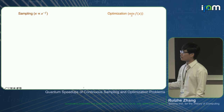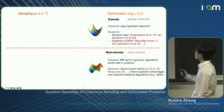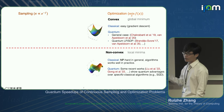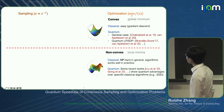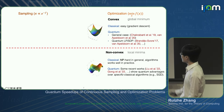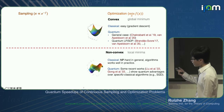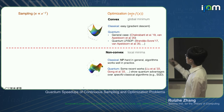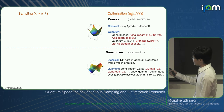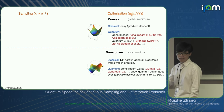I want to make an analogy between the area of sampling and the area of optimization. We probably know more about optimization. There is a very clear separation between the easy and hard regime for optimization—that is convexity. If the function f is convex, gradient descent can very easily find the global minimum. If f is non-convex, it has many local minima and classically in the worst case it will be NP-hard, although in practice many efficient heuristic algorithms work well.